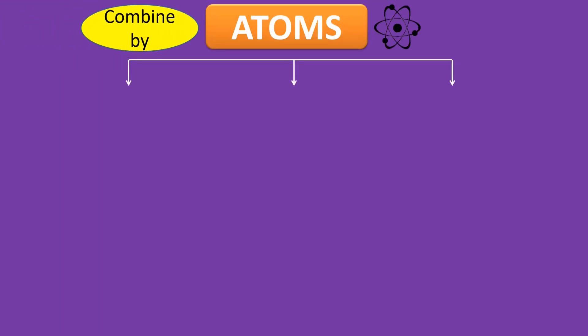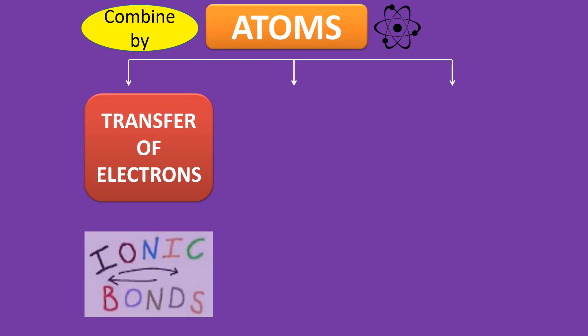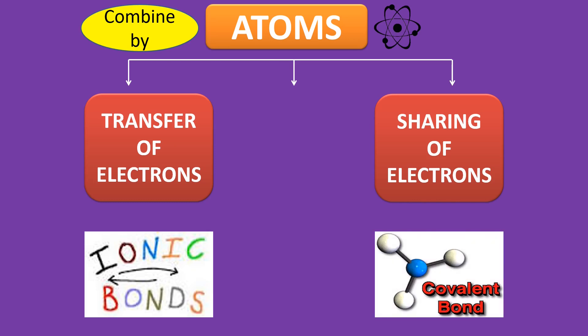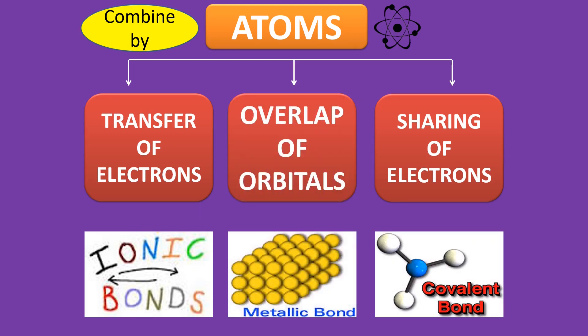Atoms combine by transferring of electrons, known as ionic bonds. It can also be through sharing of electrons, known as covalent bonds, or by overlapping of orbitals, known as metallic bonding. In this lesson, let's focus first with metallic bonding.